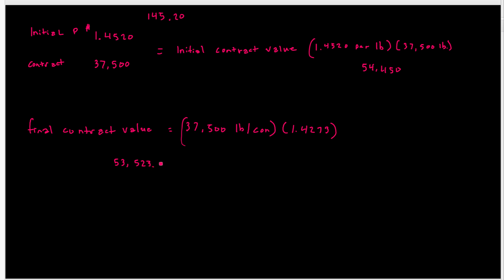Now we need to figure out if there's a gain or a loss. The first thing to note is that we bought this futures contract. The initial price was $54,450 and the final price was $53,523.75. The difference is $926.25, and this is actually a loss.